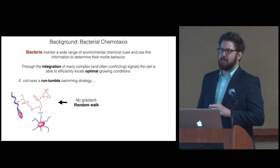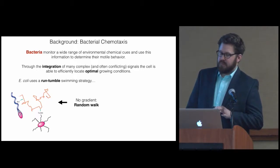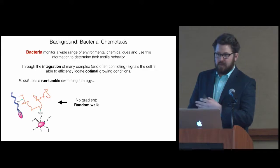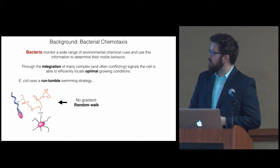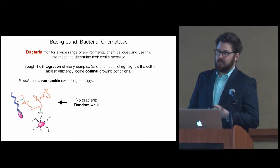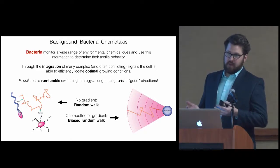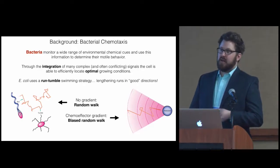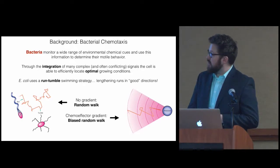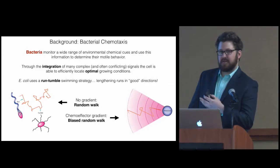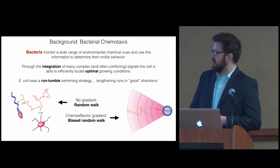E. coli uses a deceptively simple run-tumble strategy in which it has two moves. It runs, which is a prolonged straight-line movement, or a tumble, which is where it randomly reorients in a sporadic way. In the absence of a gradient, this results in a random walk. However, in the presence of an attractant gradient, this random walk becomes biased, and the net propagation of the cell is such that you get closer to the source of the attractant.